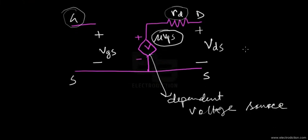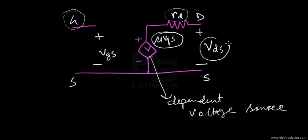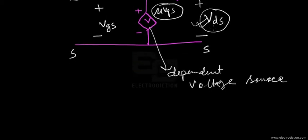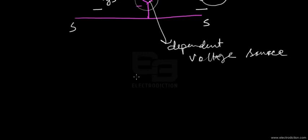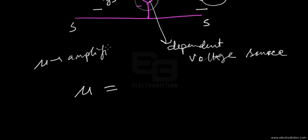Since this is a voltage control model, we have a dependent voltage source. Its magnitude is mu · V_GS. We're trying to form an equation for the output voltage V_DS produced by the FET in terms of its parameters. Since we're working with the AC model of the FET used as an amplifier, mu is referred to as the amplification factor.